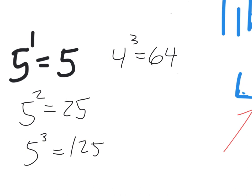How about 3? 3 to the 1st — 3. 3 to the 2nd — 9. 3 to the 3rd — 27. All right, and then the 2s.